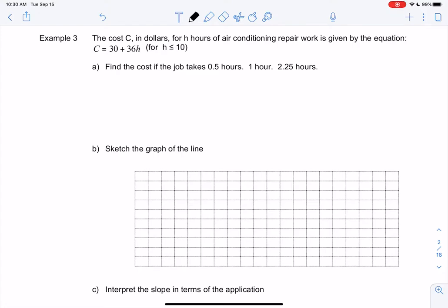So we have the cost in dollars for h hours of air conditioning repair is given by the equation. So we're going to input h because h is with the numbers and we're going to output c. So h will be my x or my predictor in stat terms. So we're saying can hours predict the cost? And so cost is my y or my response.